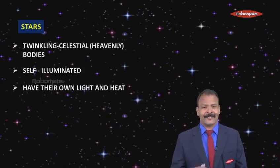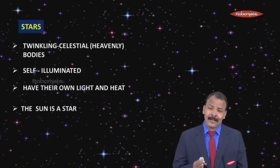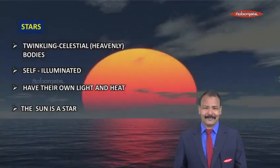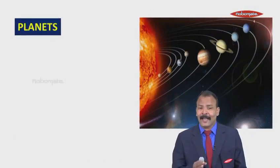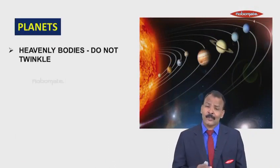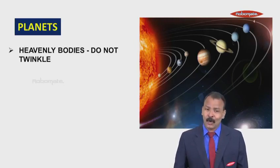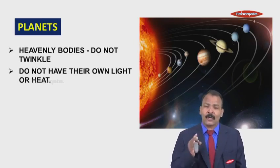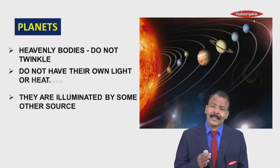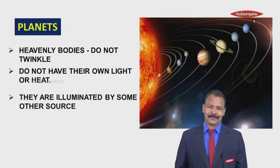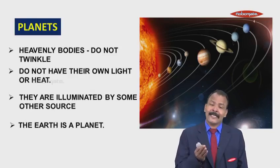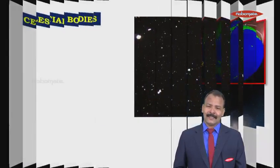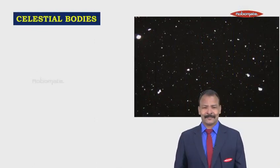The Sun is also a star, but we see it differently. The reason is it is very close by. Now coming to planets, they are also heavenly bodies but they do not twinkle. The reason is they do not have their own light or heat. They are illuminated by some other source and the Earth itself is a planet. The Earth is our mother planet.